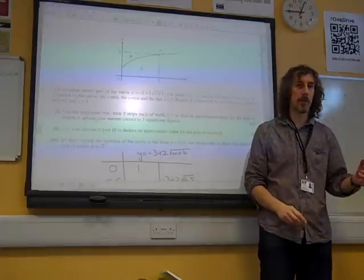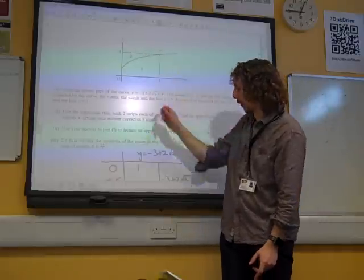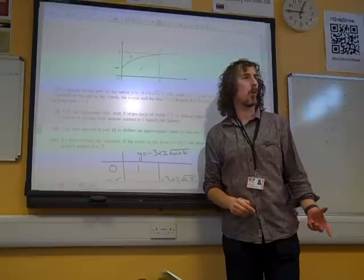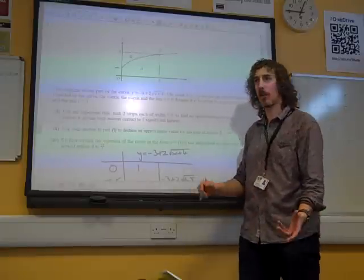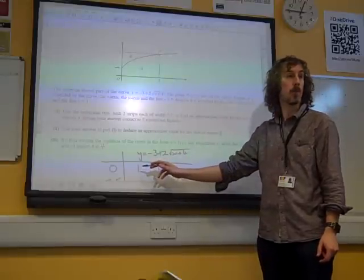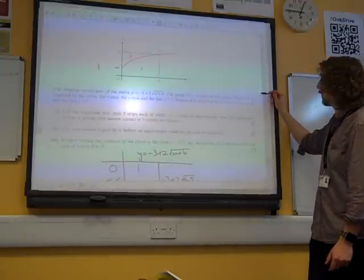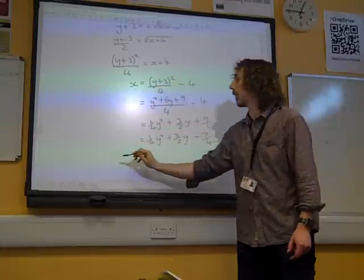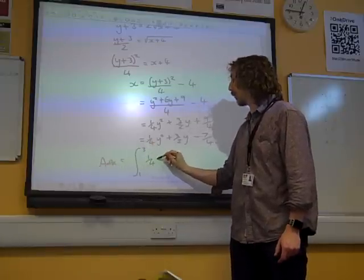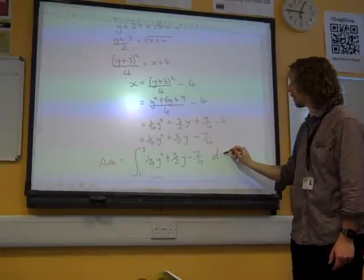We're missing one vital bit of information here. If we're going to integrate it, we need to integrate it from that point there to 3. So what is that point there? It's just the value of this function when x equals 0, which we've already calculated. It was 1. So that point there is 1. So we are doing the integral from 1 to 3 of a quarter y squared plus 3 over 2y minus 7 over 4 with respect to y.